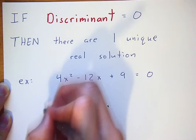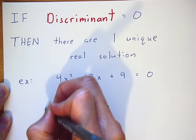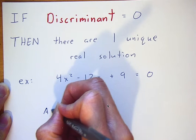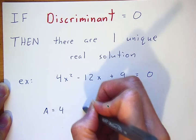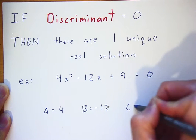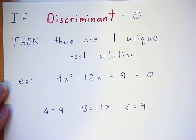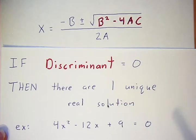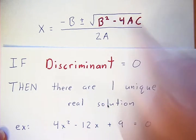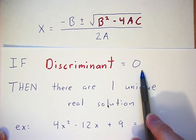Let's say I have the equation 4x squared minus 12x plus 9 equals zero. Here my a is equal to 4, my b is equal to negative 12, and my c is equal to 9. If I were to plug those values into my quadratic equation, the b squared minus 4ac would equal zero.